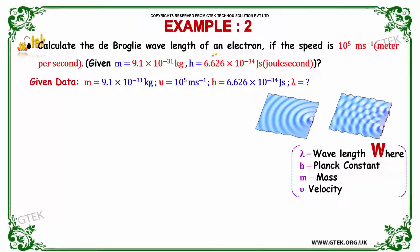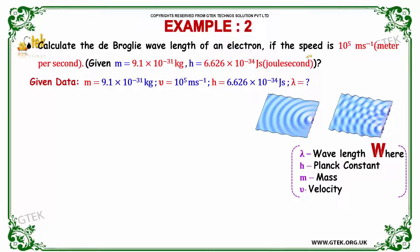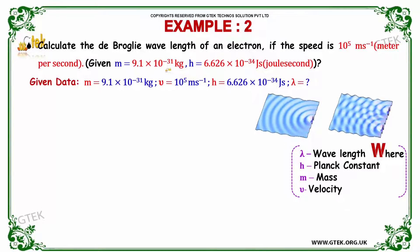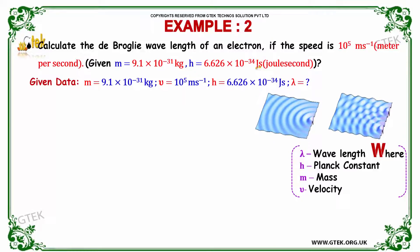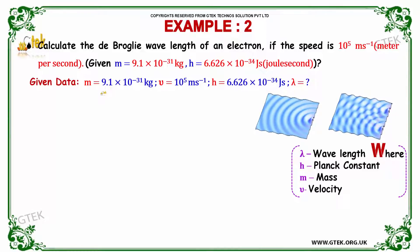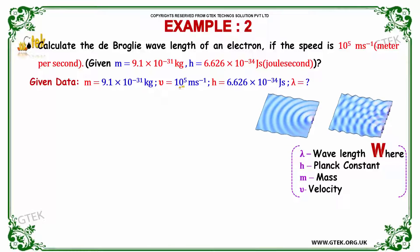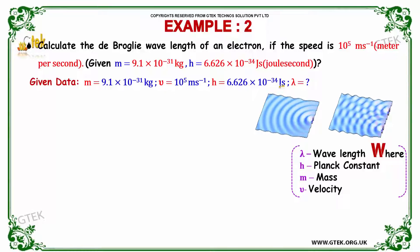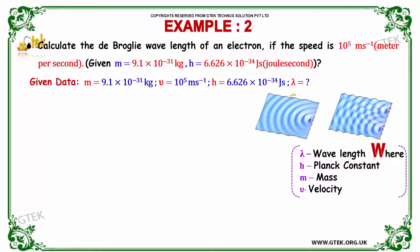Calculate the de Broglie wavelength of an electron if the speed is 10⁵ meter per second. Given: m = 9.1 × 10⁻³¹ kg, h = 6.626 × 10⁻³⁴ Joule second, and v = 10⁵ meter per second. We need to find lambda.